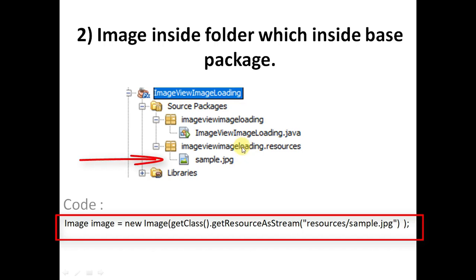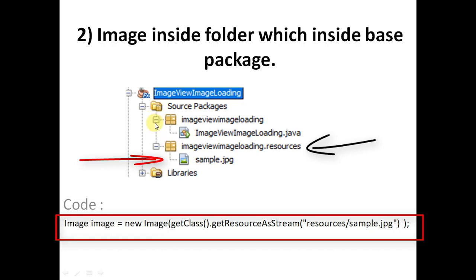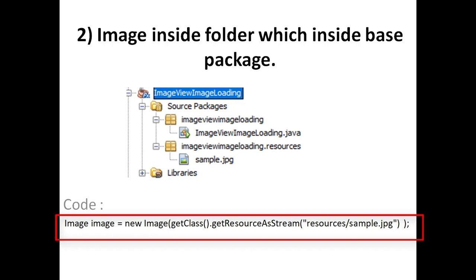Now considering the second scenario, where we are placing our image inside a folder which is inside the base package. The base package is 'imageview.imageloading', and the second folder is inside it — that's why we use 'imageview.imageloading.resources'. The way to load this is: new Image(getClass().getResourceAsStream("resources/sample.jpg")). There is no forward slash, meaning it will search the resources folder inside the current directory.